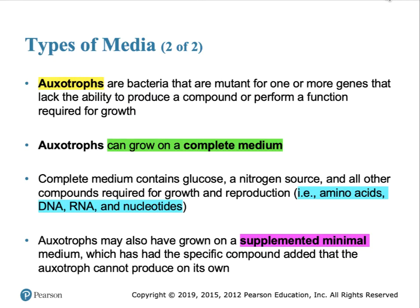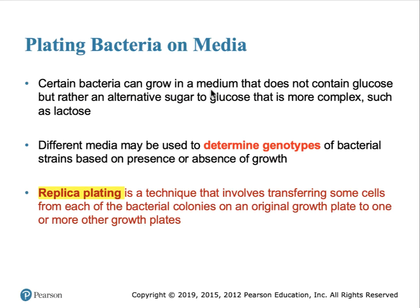In comparison, auxotrophs are mutant bacteria. They have either a mutation in one pathway or more that prevents them from growing on minimum media. They can be grown on minimum media if it is supplemented by the addition of a chemical in the pathway beyond the point at which they are missing something, i.e., downstream of the mutant location. By plating bacteria on different types of media, one can identify the genotype of that bacterial strain.